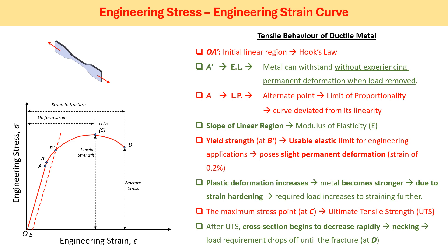When we keep stretching the material further, we observe that no more load needs to be applied — rather, the applied load keeps decreasing. This is because of necking in the material. After reaching a certain point D, the material fractures. The total area under the curve up to the fracture point is known as the toughness of the material.